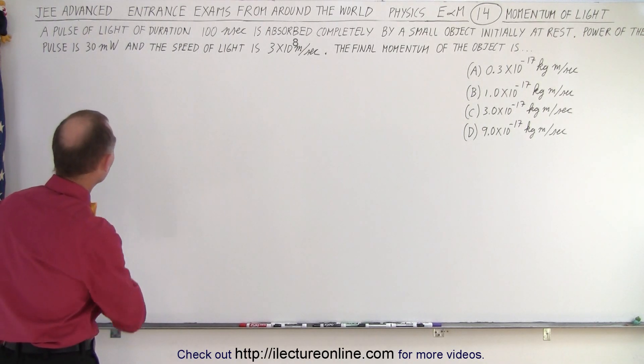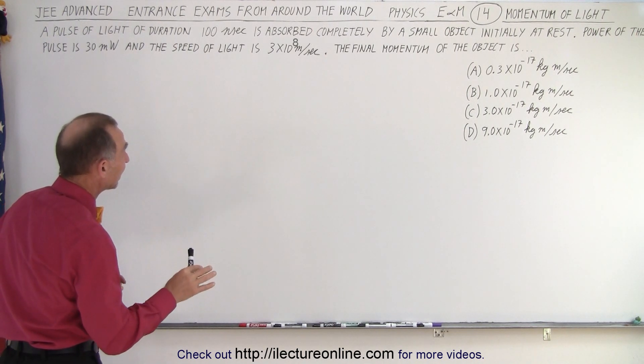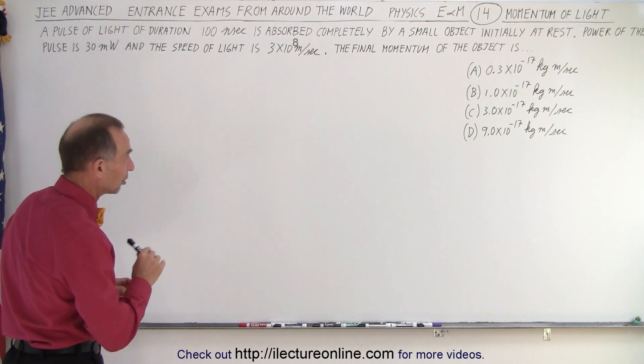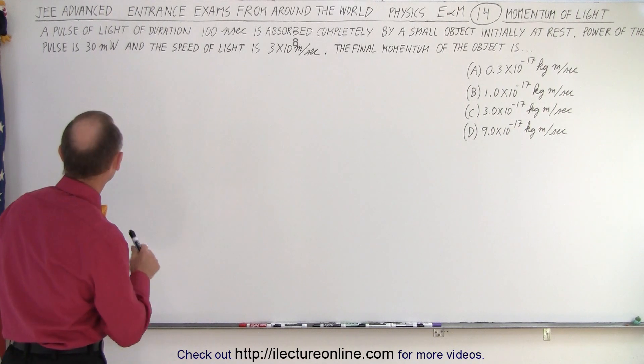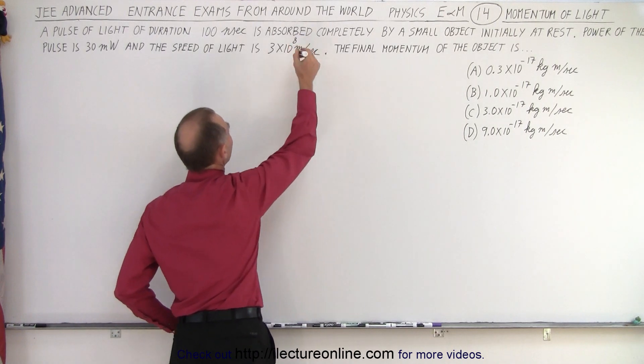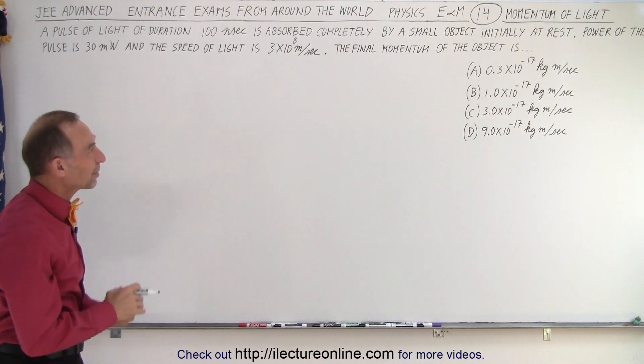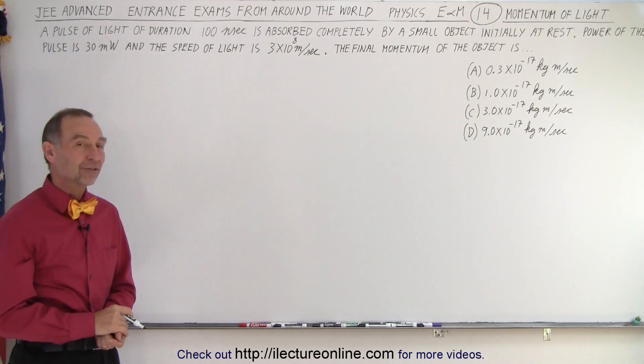Let's read it together. A pulse of light of duration 100 nanoseconds is absorbed completely by a small object initially at rest. Power of the pulse is 30 milliwatts and the speed of light is 3 times 10 to the 8 meters per second. The final momentum of the object is, and they give us 4 possible answers.